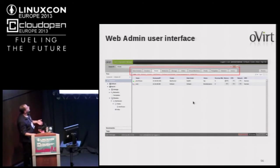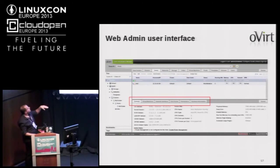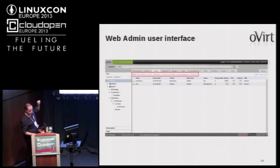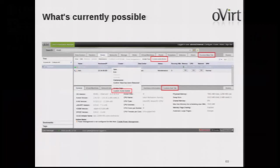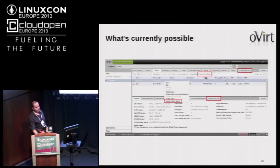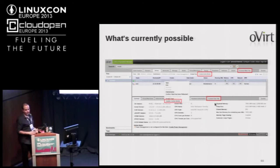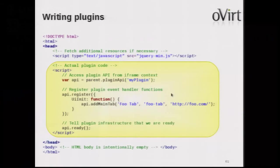What we currently allow you to extend is: adding a new main tab to the system, adding a new subtab in the context of a specific main entity (for example, the host), adding new action buttons, and adding new context menu items. These can appear in the toolbar panel and/or the right-click context menu.